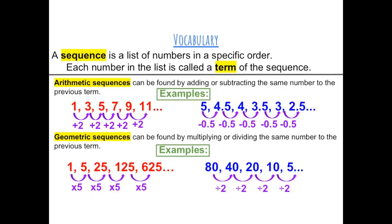Arithmetic sequences can be found by adding or subtracting the same number to the previous term. Here is an example: 1, 3, 5, 7, 9, 11 is an arithmetic sequence because you can add 2 to get to the next term.